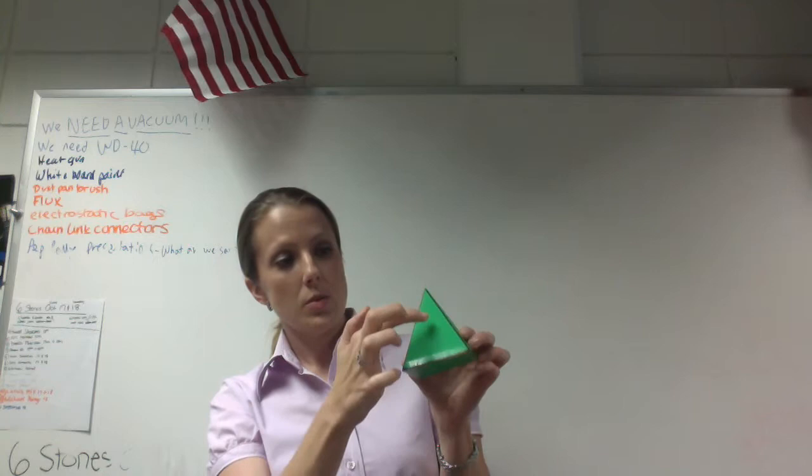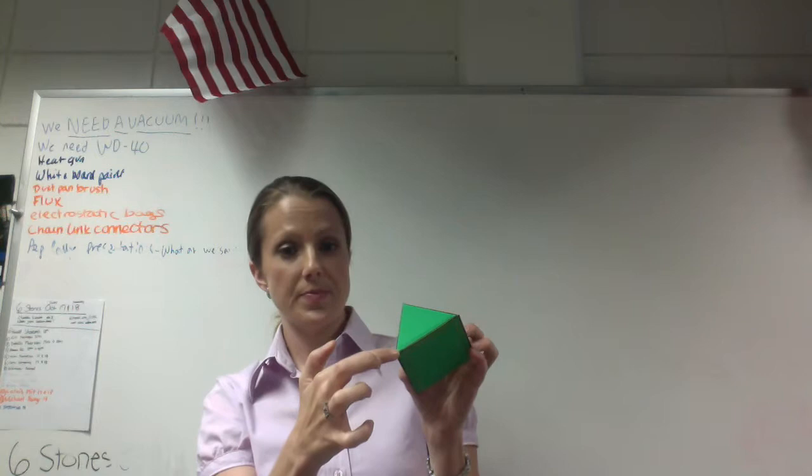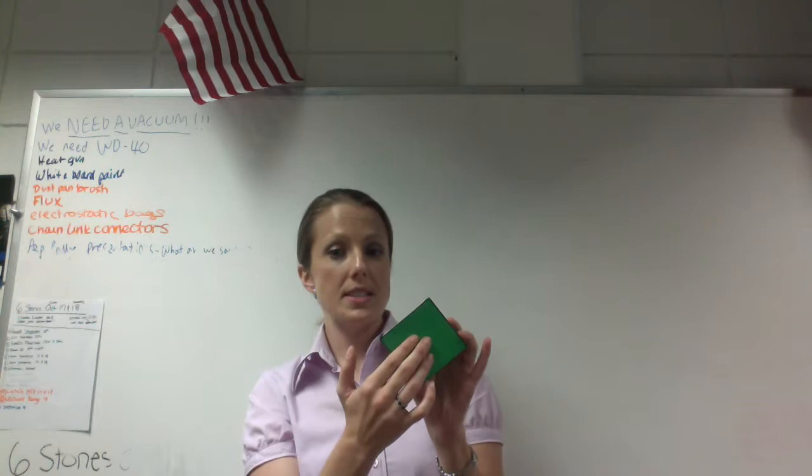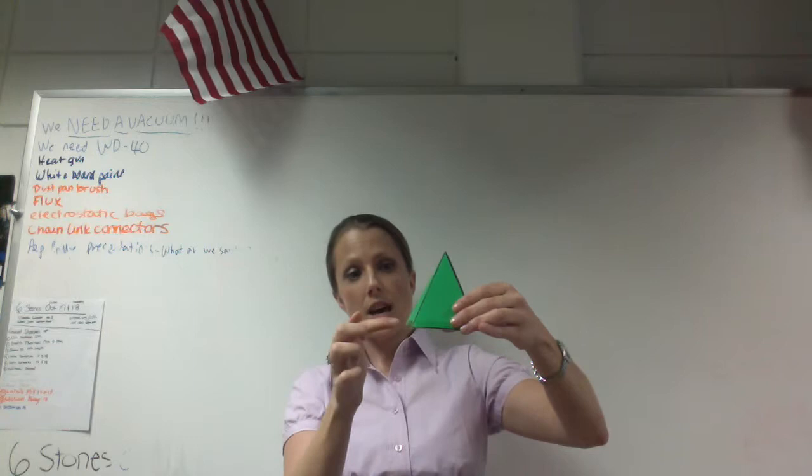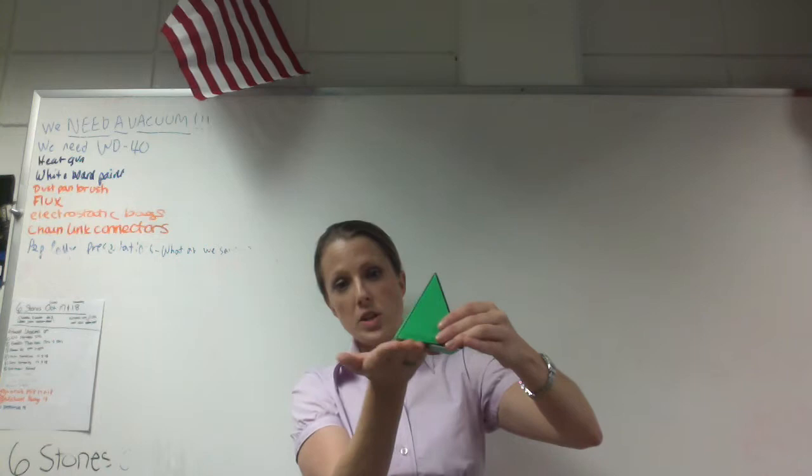Down here, you have the square face, which meets with a triangular face, and this would be the edge between these two faces. The bottom of an object is called the base. The base is perpendicular to the height. So for this orientation, the height from here to this point would be perpendicular to the base, which in this case is the square face.